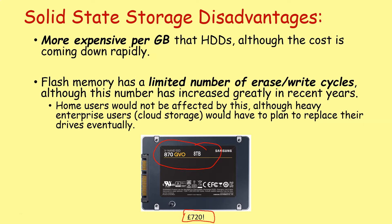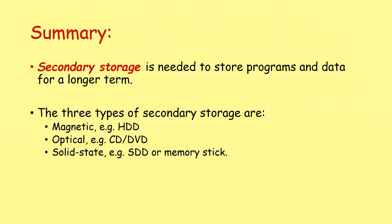So in summary, secondary storage is needed to store programs and data for a long time. There are three main types of secondary storage: magnetic storage — for example, hard disk drives; optical, such as CDs and DVDs; and solid state storage — for example, your solid state drive or your portable USB memory stick. In the next lesson, we're going to start looking at comparing and contrasting these types of technology so that you can make a choice for which technology works better in different situations.